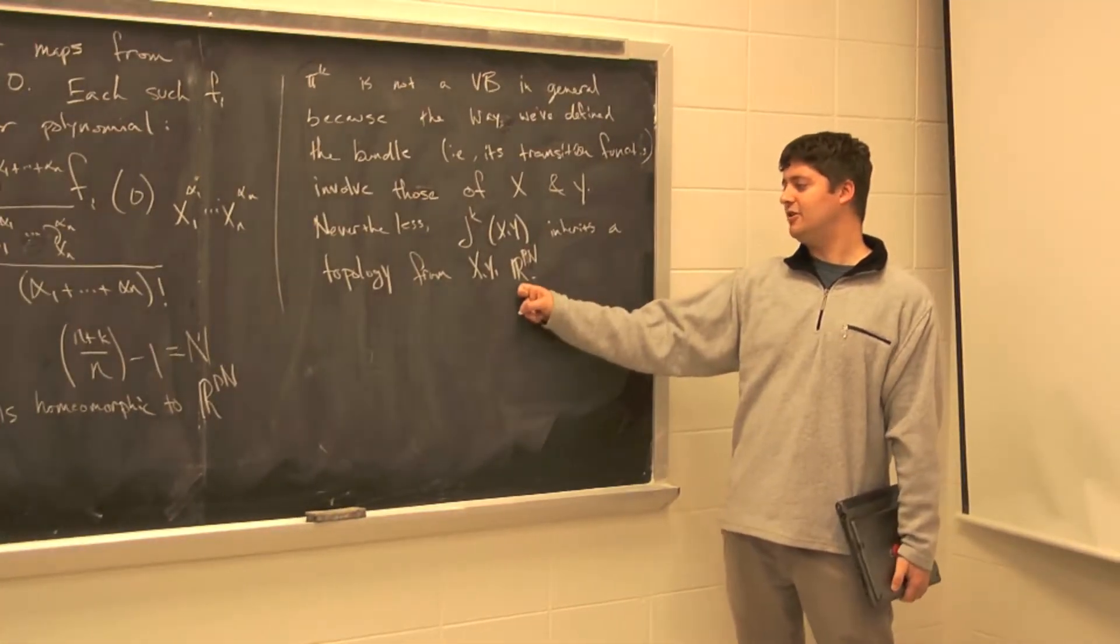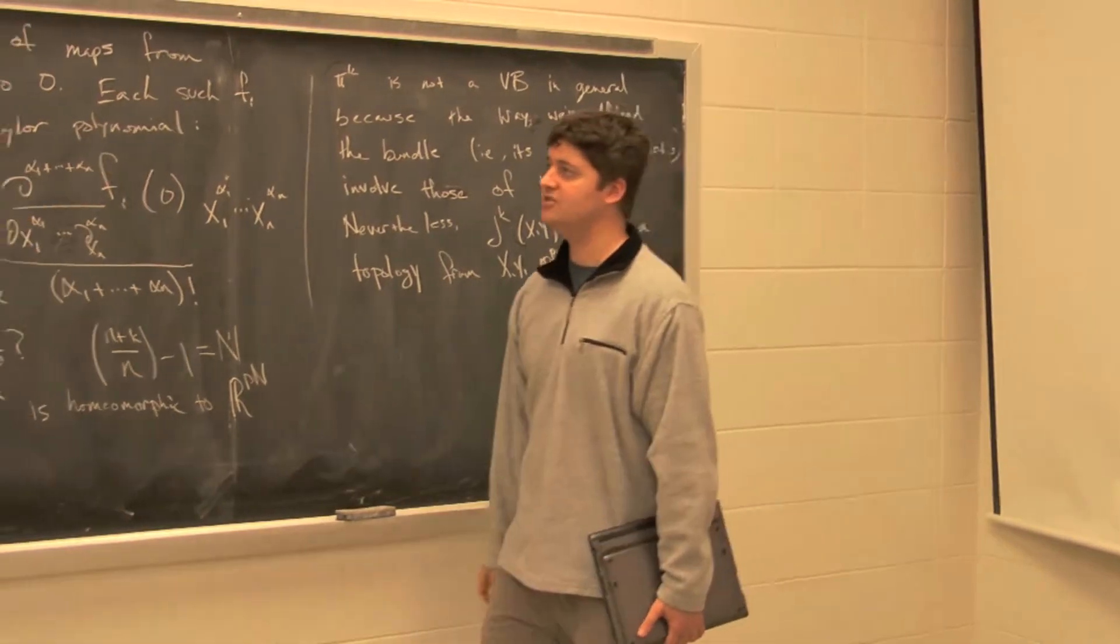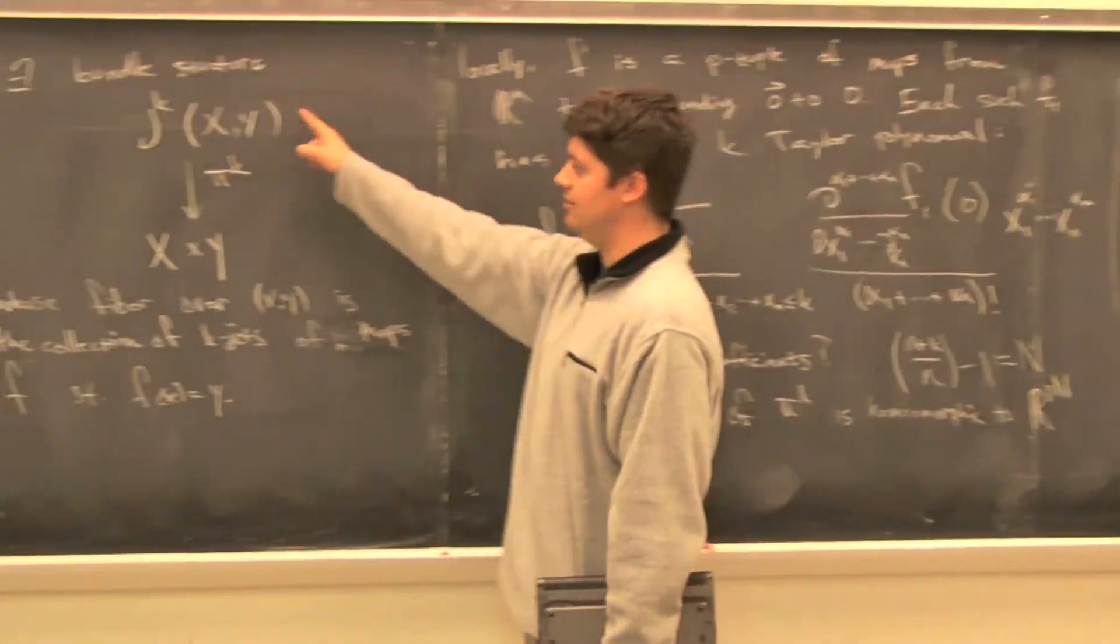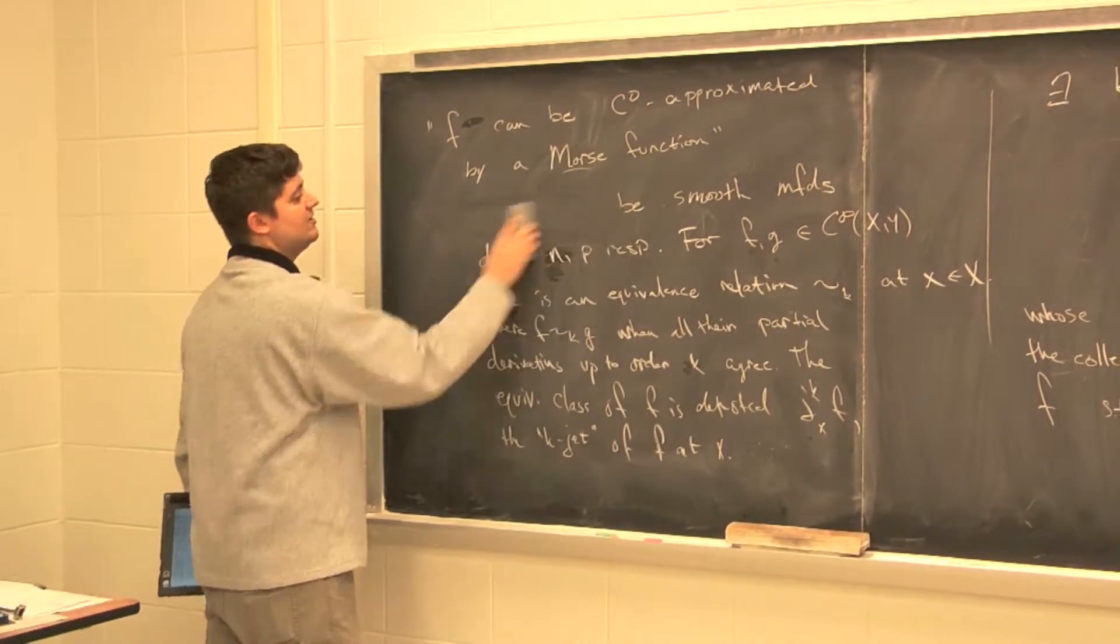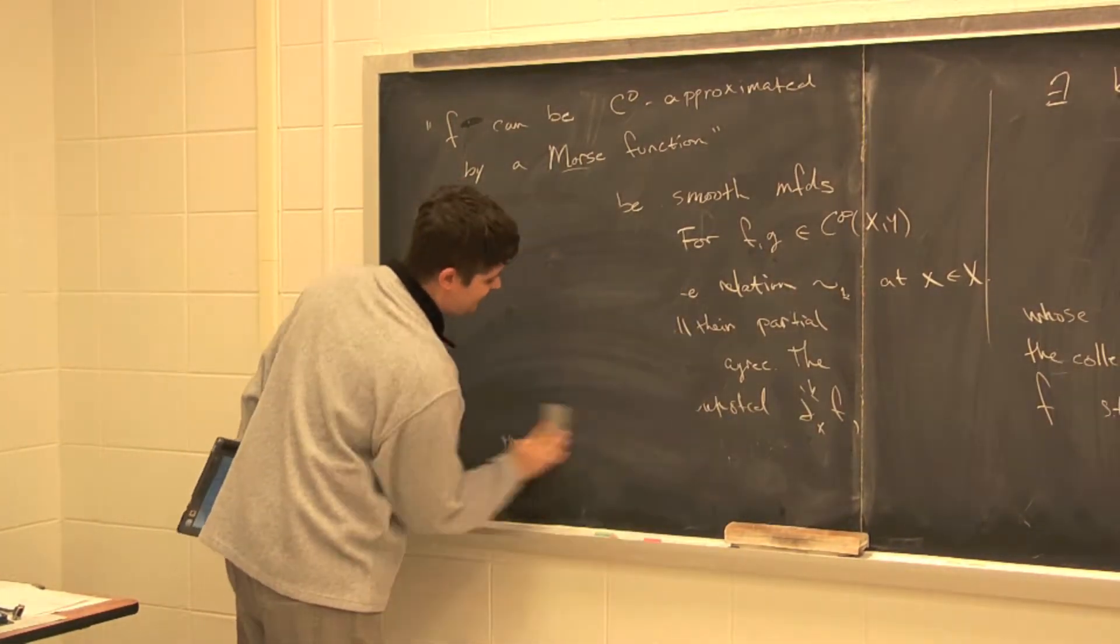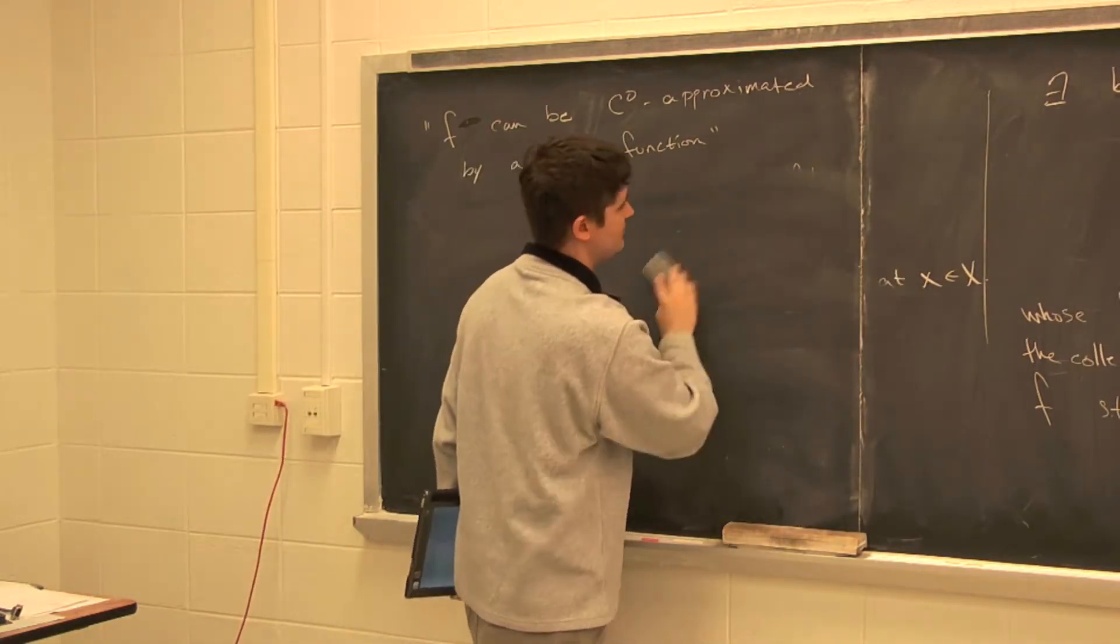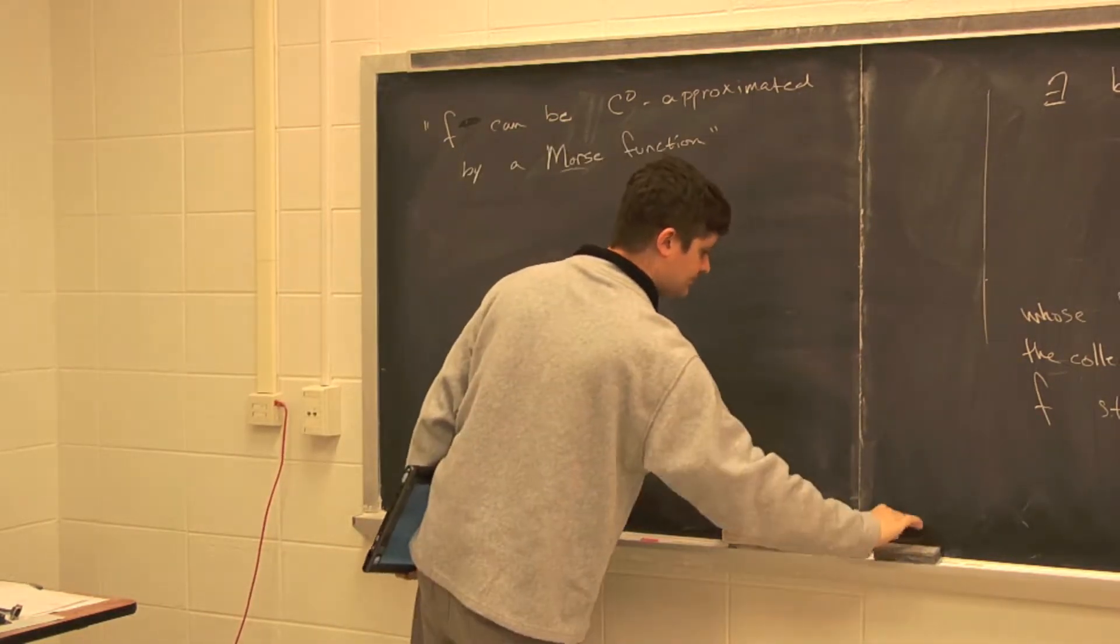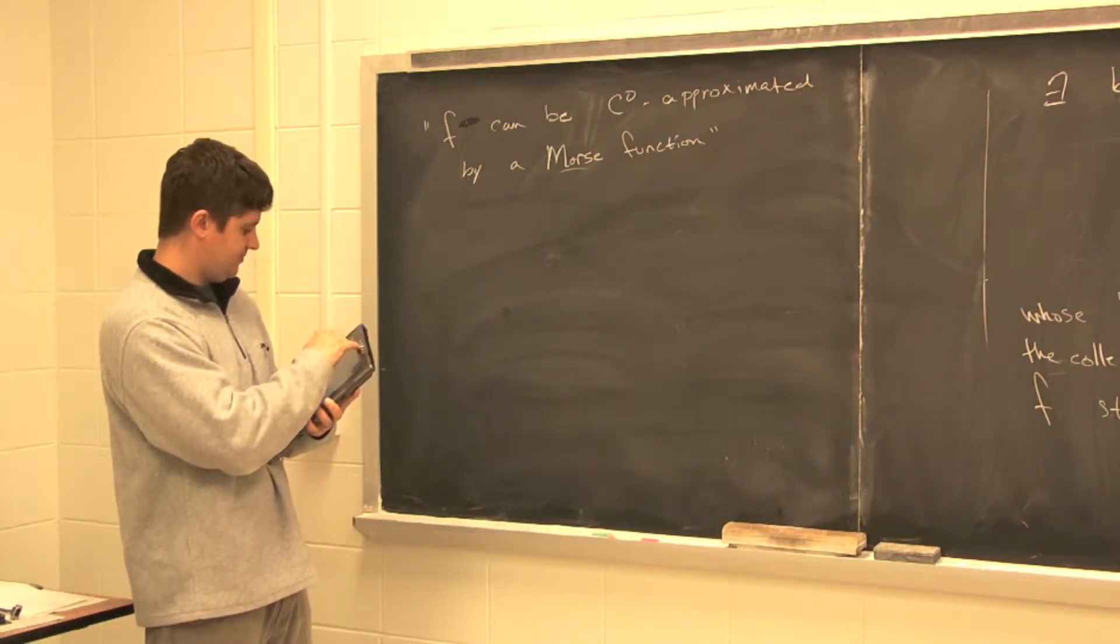So you know, at least in principle, what open sets are. A couple of observations: for k less than k', there's a canonical embedding.